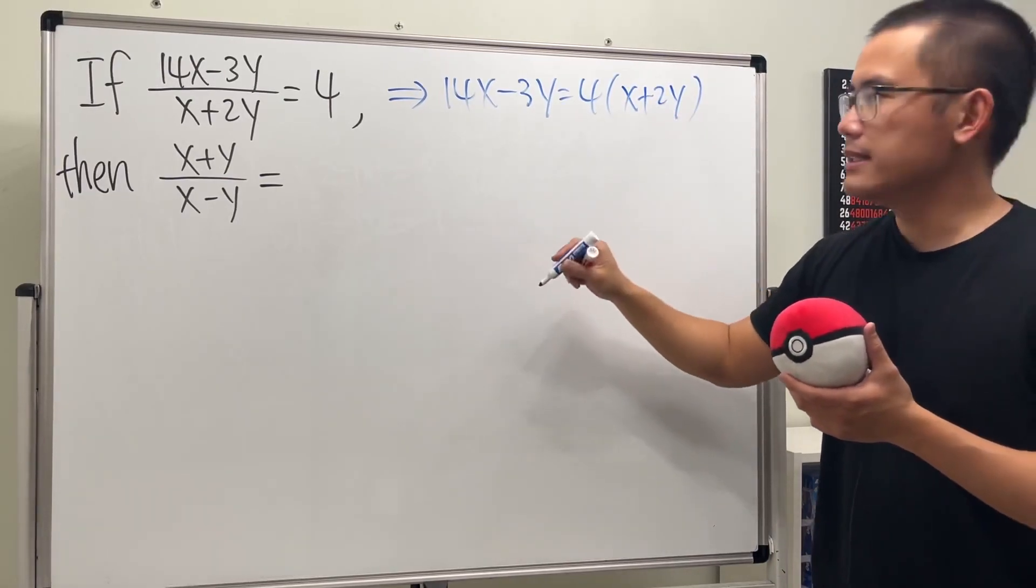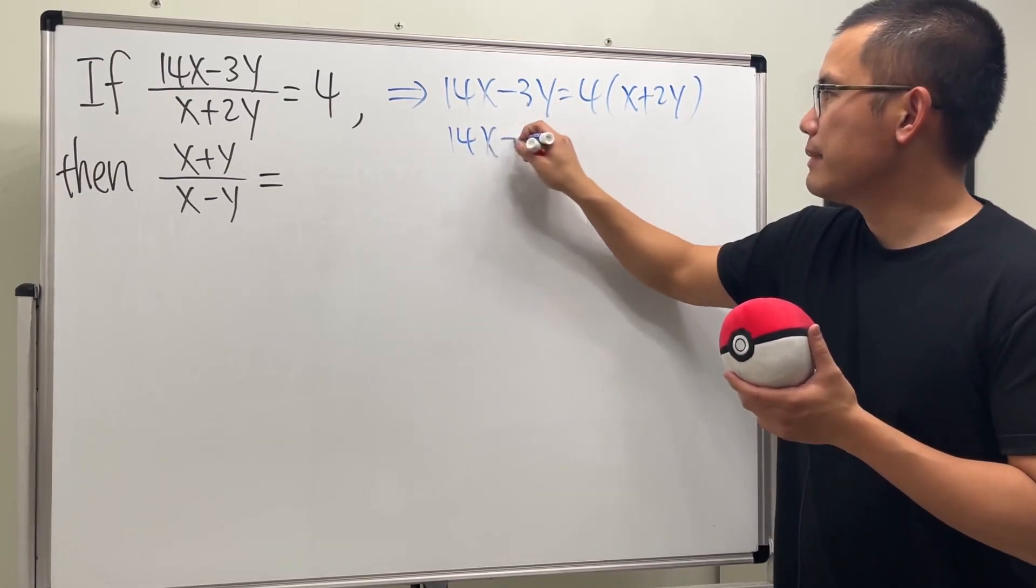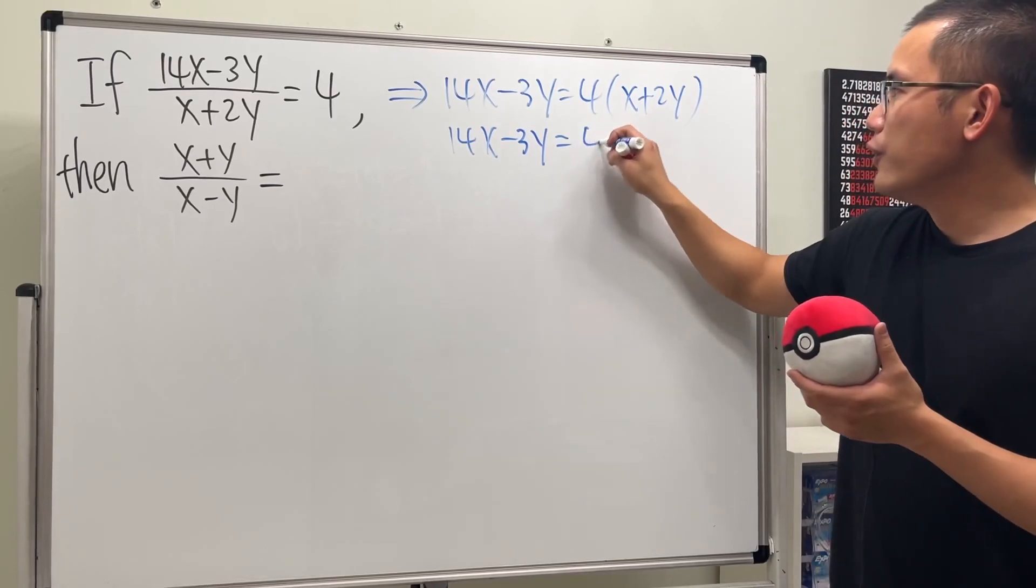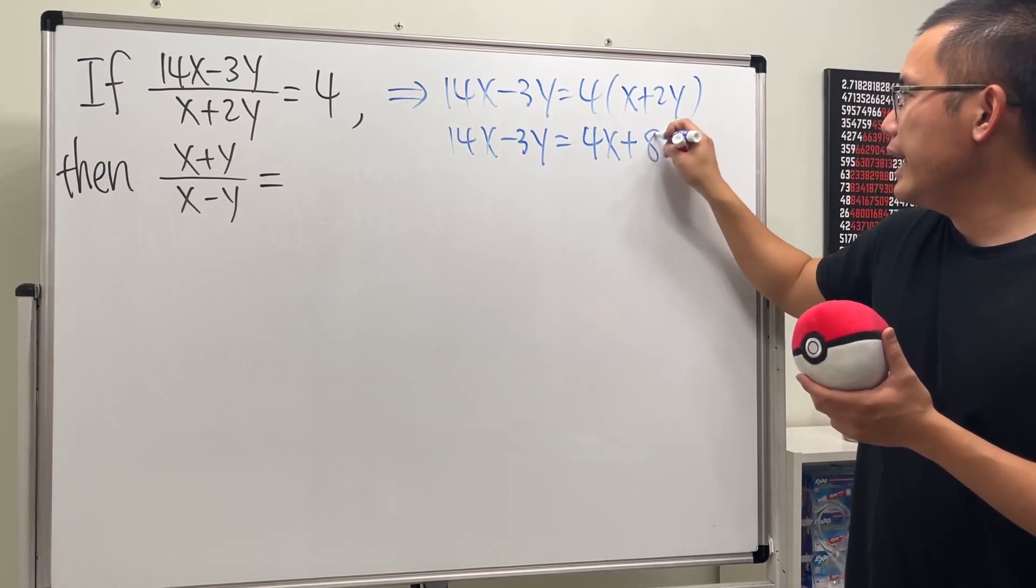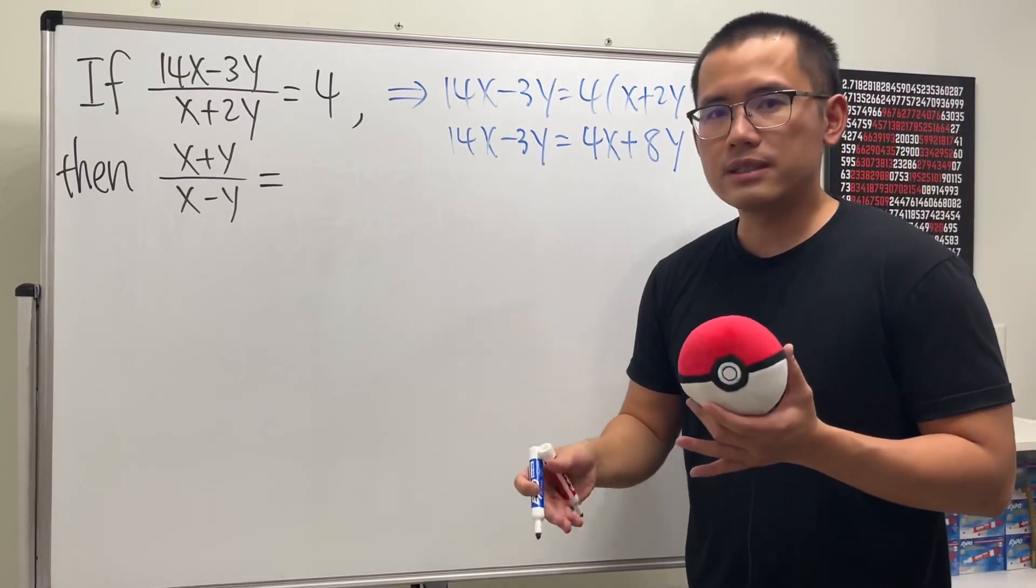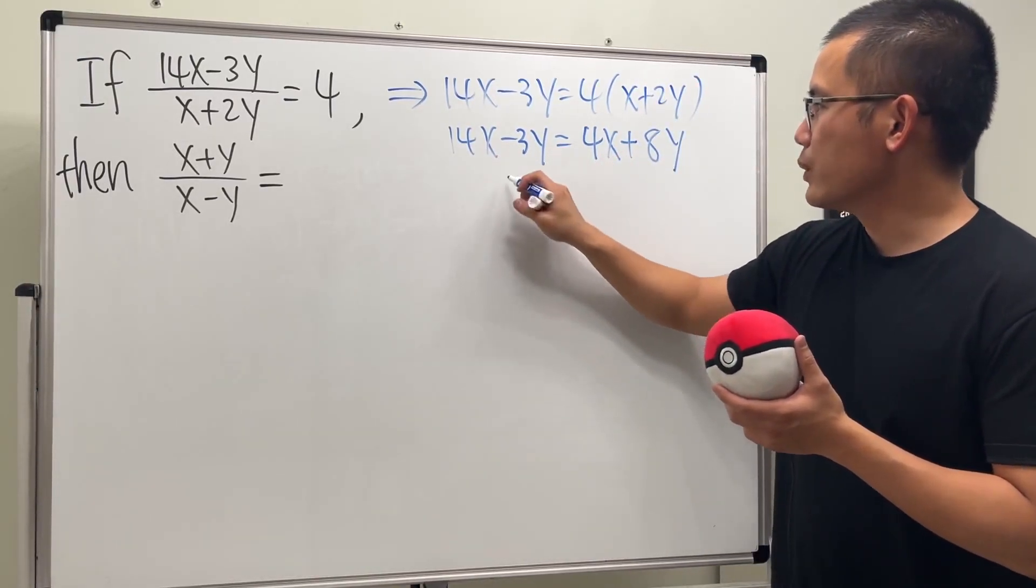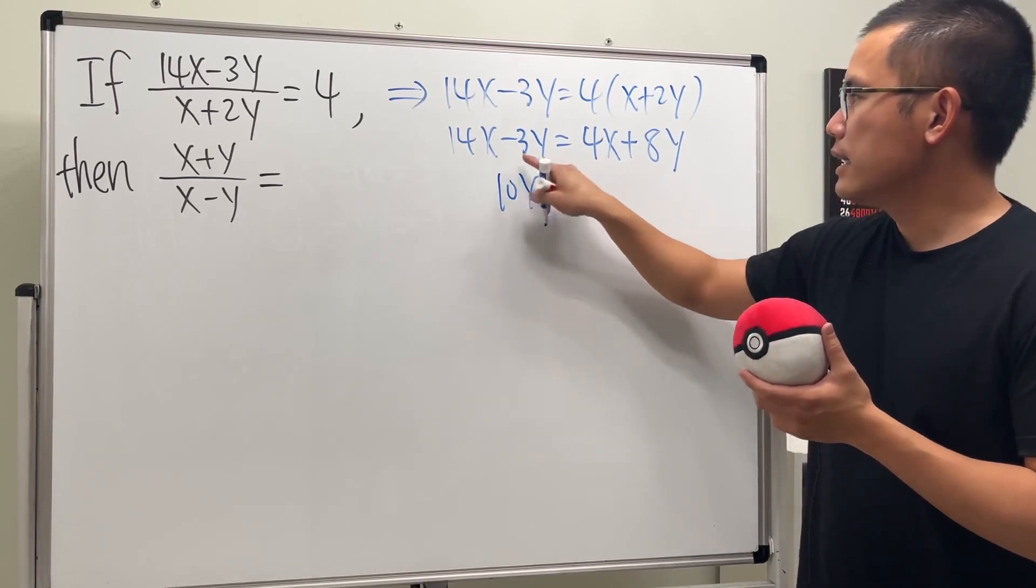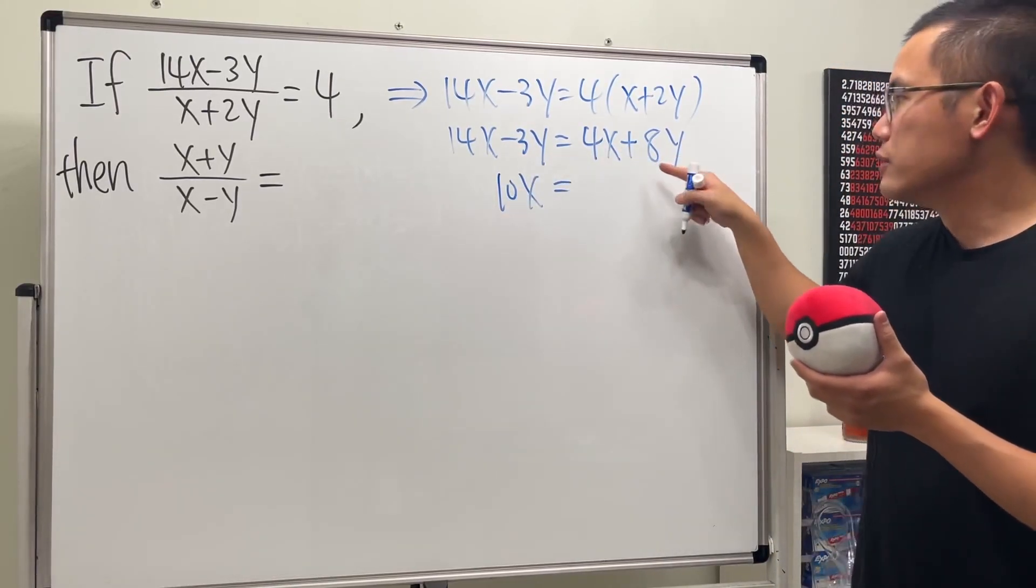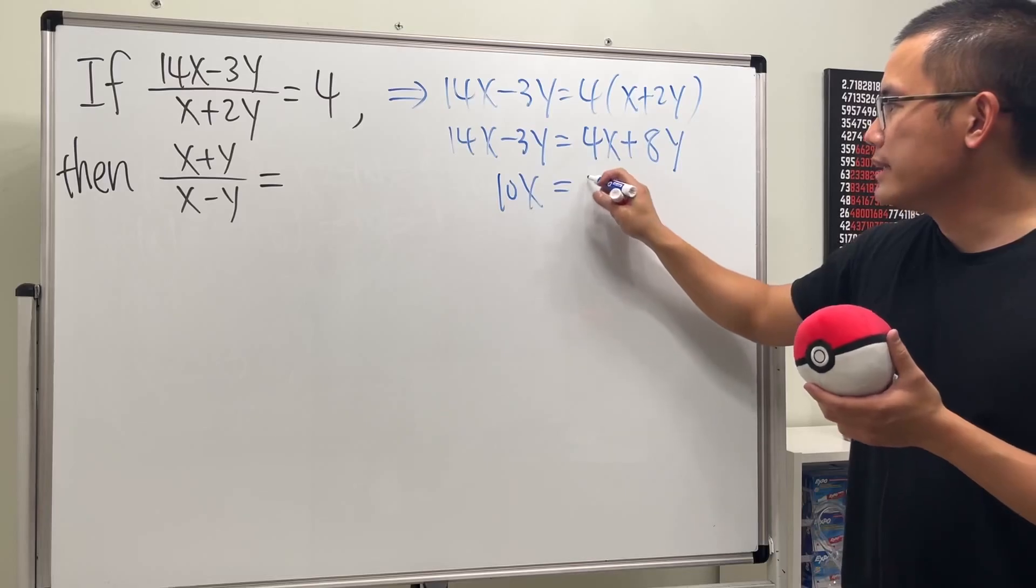And perhaps let's just multiply things out. So we get 14x minus 3y equals 4x plus 8y. And let's just put all the x on one side and all the y's on one side. Minus 4x on both sides, we get 10x. Equals. Let's move this to the other side. So 8y plus 3y is 11y.